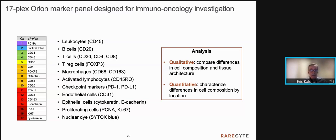A 17-plex panel was used to investigate the tissues. The markers cover biomarkers pertinent to immunology and immuno-oncology. They include the leukocyte marker CD45, B cell marker CD20, the T cell markers CD3, CD4, and CD8, the T regulatory cell marker FOXP3, the macrophage and dendritic cell markers CD68 and CD163, CD45RO as a marker of activated lymphocytes, the checkpoint markers PD1 and PDL1, the endothelial cell marker CD31, the epithelial cell markers cytokeratin and E-cadherin, the proliferating cell markers PCNA and KI67, and finally a nuclear dye, Cytox blue. In this study, I will present both qualitative and quantitative analysis of the image data.